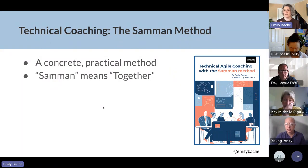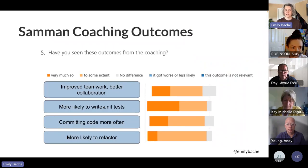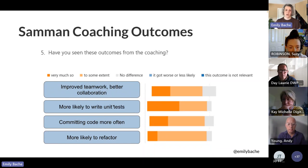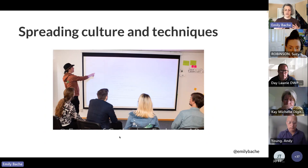The word Saman means 'together' in Swedish. I wanted my method to have a name so you could search for it on the Internet. I ask people at the end what outcomes they've seen, and they talk about increased collaboration and teamwork, more likely to write unit tests, committing code more often, and more likely to refactor. This is encouraging because there are so many organisations where developers just don't refactor and don't write unit tests. It seems to be a way that actually helps make a difference — it's all about spreading this culture of taking pride and doing things the right way to remove technical debt.